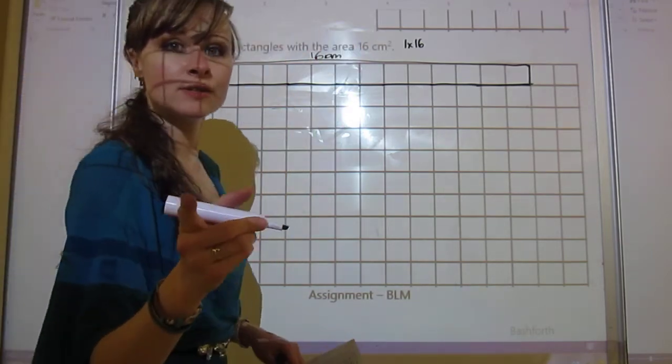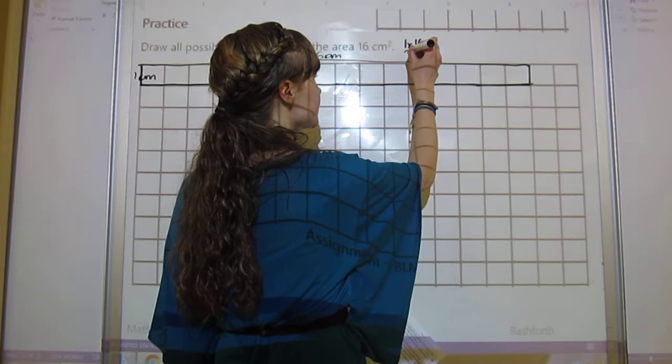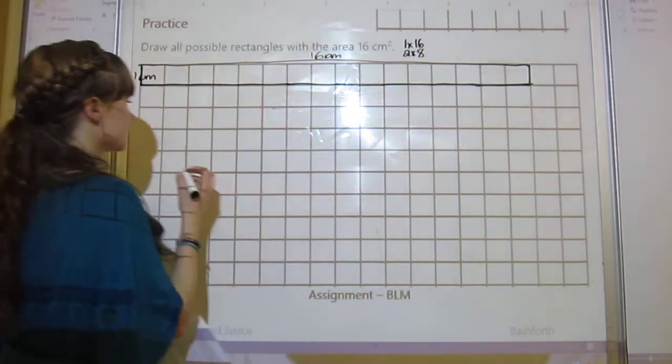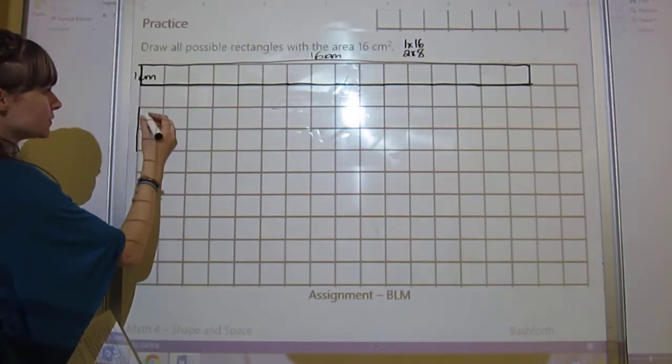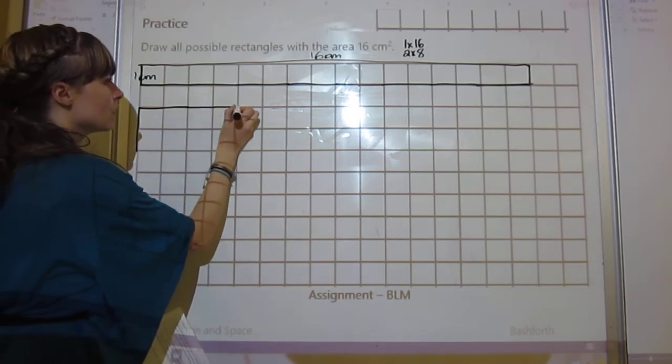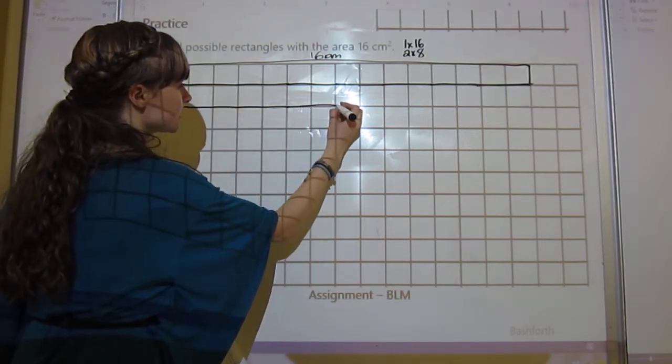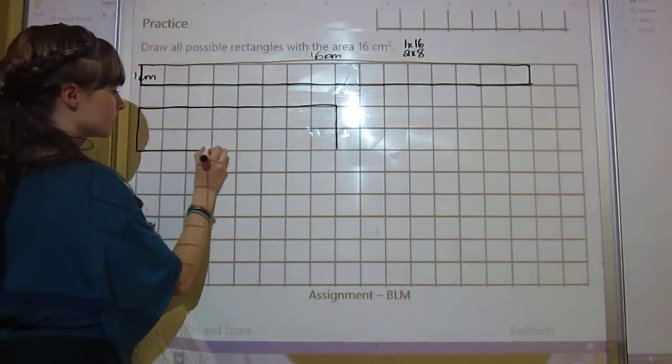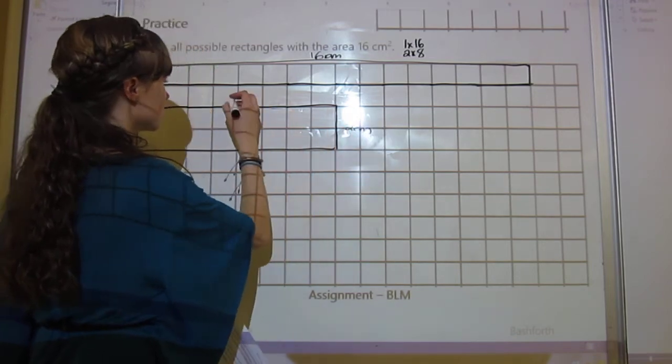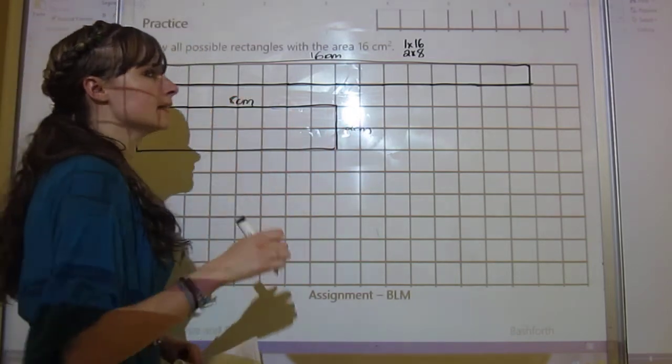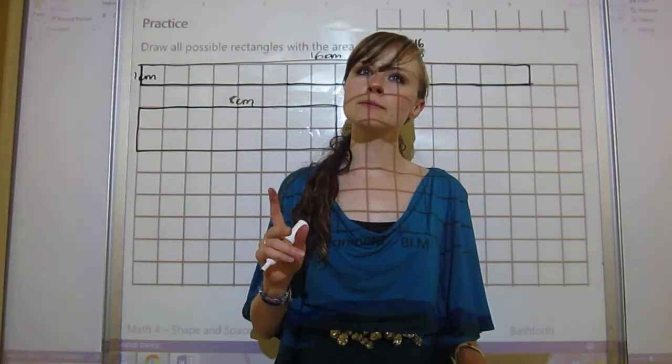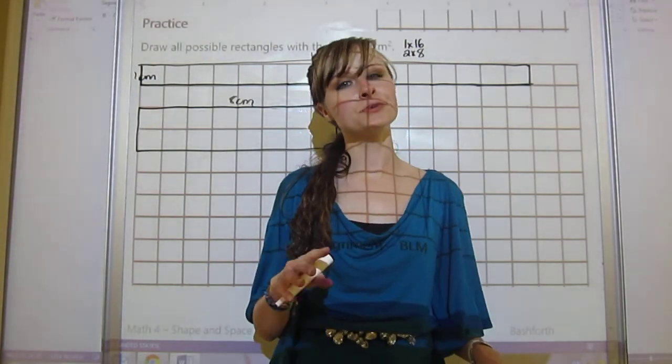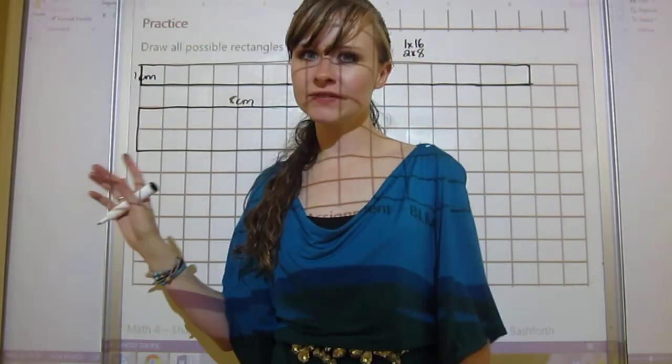Next one we could do 2 because 2 times 8 equals 16. So there's 2 and then 2, 4, 6, 8 across.